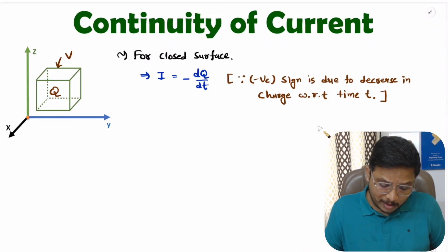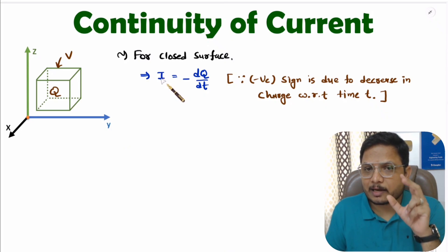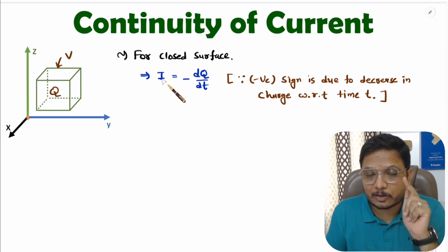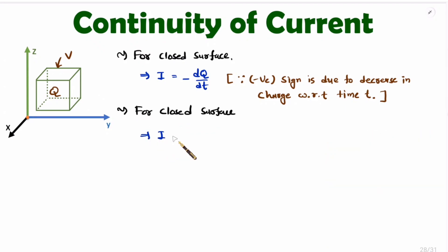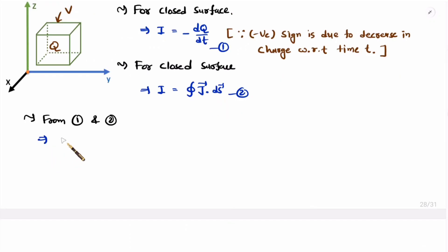Now I'll express this current with respect to current charge density J. The surface integration of current charge density gives the total current for a given enclosed surface. So current I is given by the surface integration of current charge density for a closed surface. Let us say this is equation one, and the previous expression is equation two.